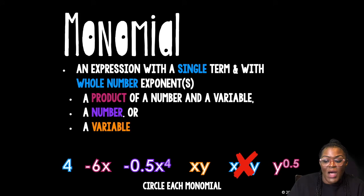And then you have y to the 0.5, which looks close, but it's not because the exponent is not a whole number. That first bullet point with whole number exponents. 0.5 don't count.